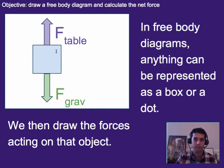So in free body diagrams, anything in the world can be represented as a box or a dot. And then when we draw them, we just draw the forces acting on that object. So if this were my book, we'd have the force from the table on it and the force due to gravity acting on that book. We don't label or include anything else on the free body diagram.